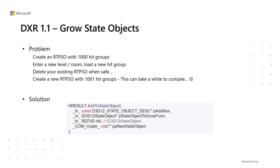Besides inline ray tracing, DXR 1.1 also allows games to grow state objects more efficiently. For example, if you have a ray tracing PSO with 1,000 hit groups and enter a new level needing to add one more, in DXR 1.0 you would delete the old one and create a new one with 1,001 hit groups, which takes time to compile. With 'add to state objects' in DXR 1.1, a new state object can be made by adding shaders to an existing one, with CPU overhead proportional only to what is being added — not the overall size of the new object.